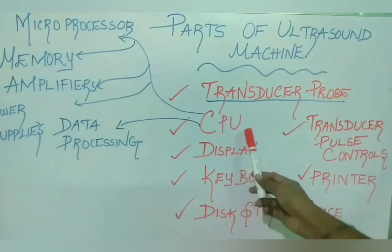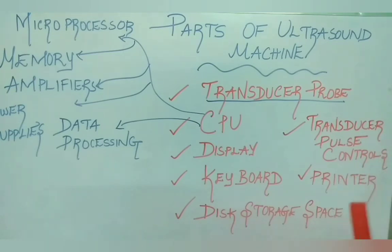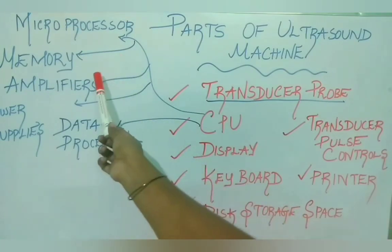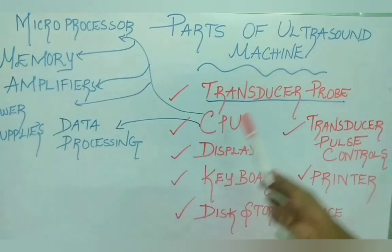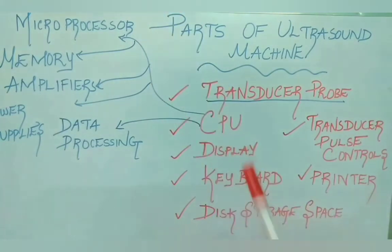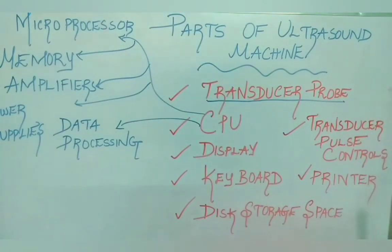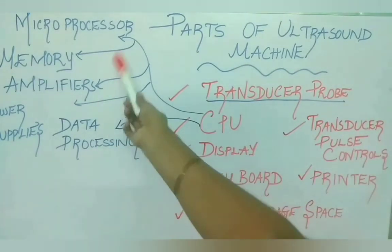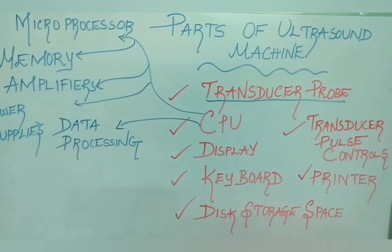Till now we studied about transducer probe. Now we are going to study about CPU or central processing unit. It is the brain of the ultrasound machine. It is basically a computer and it contains microprocessor, memory, amplifiers, power supplies for transducer probe and microprocessor. Microprocessor is a miniature electronic device that contains very small components like transistors, resistors, diodes that work together. Computer memory is the storage space in the computer where data is to be processed and the instructions required for processing are stored.